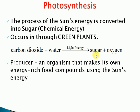Sugar is stored in the form of carbohydrates in all plants in various forms. This organism makes its own energy-rich food compounds using the sun's energy — the sun's energy is stored in the form of sugar, that means carbohydrates, through photosynthesis.